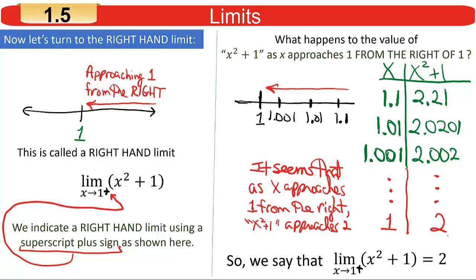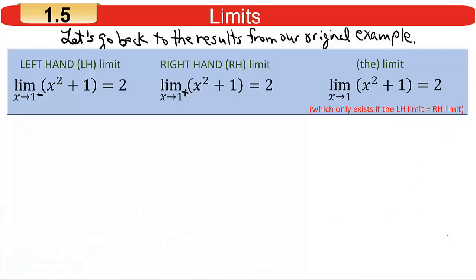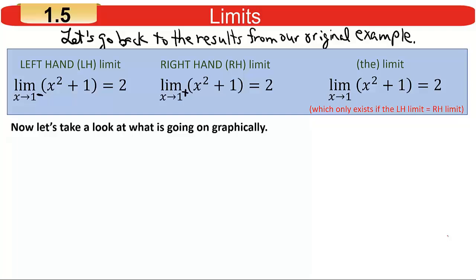That's what we mean by left- and right-hand limits. The left-hand limit was 2, the right-hand limit was 2, and therefore the overall limit — or simply 'the limit' — is 2. That happens when the left- and right-hand limits are equal to each other.